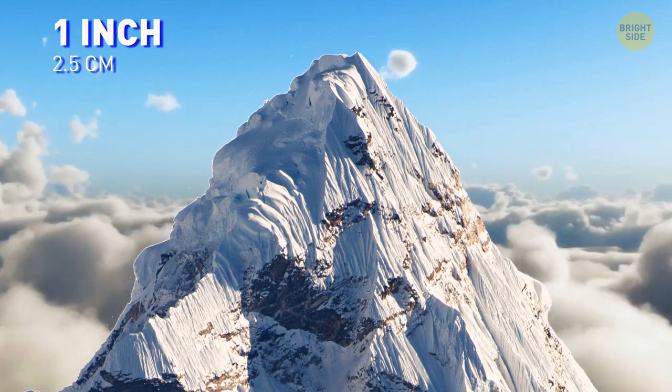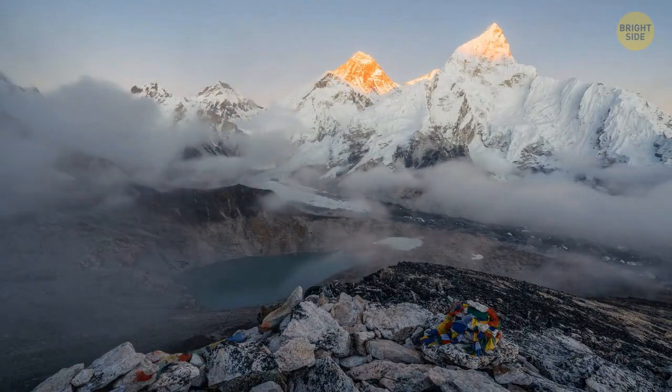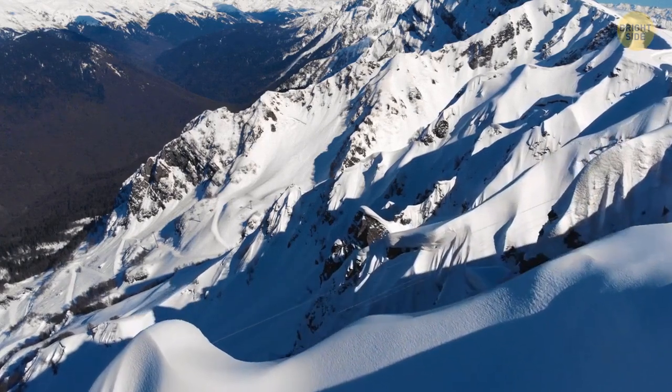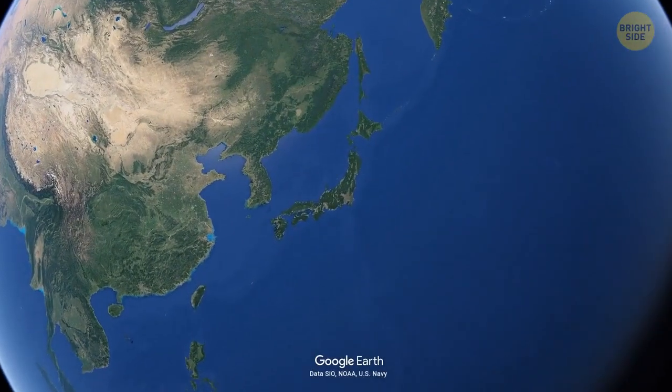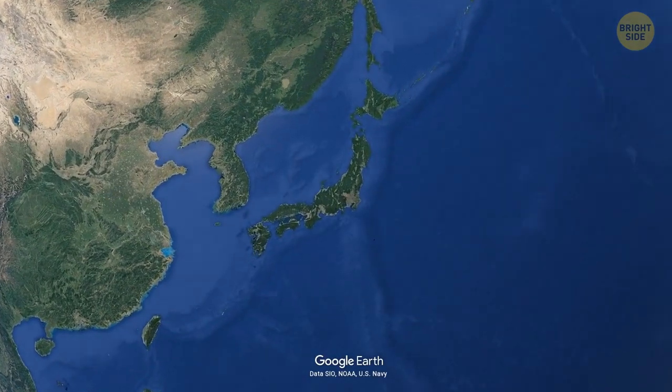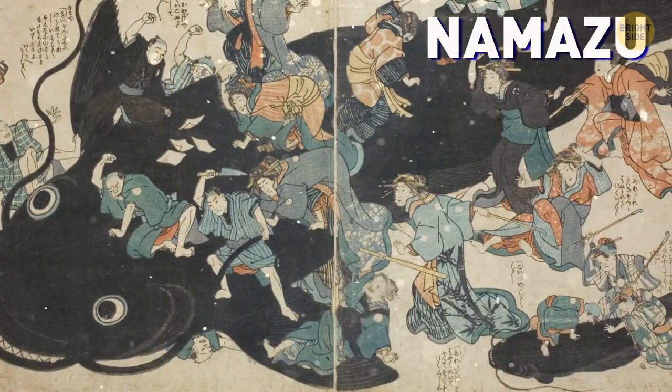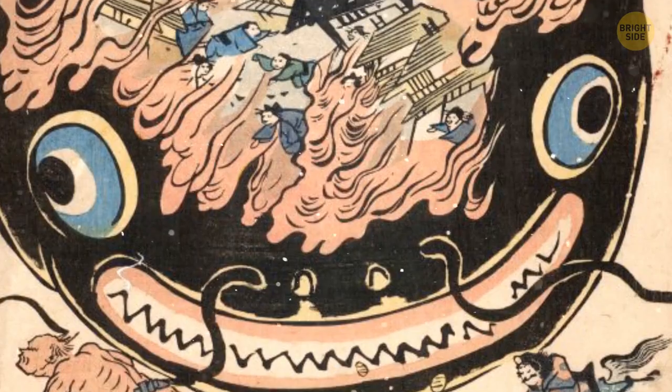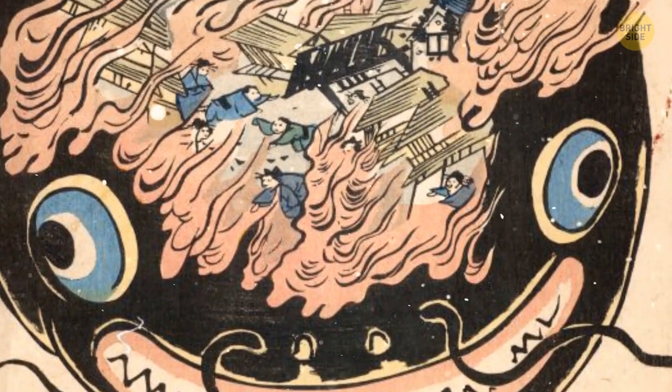It happened in 2015 when a magnitude 7.5 earthquake caused several Himalayan mountains to decrease in size. The Japanese used to believe that earthquakes were caused by Namazoo, a giant catfish that lived submerged in the mud under the Japanese islands. The fish would thrash about, causing seismic activity.